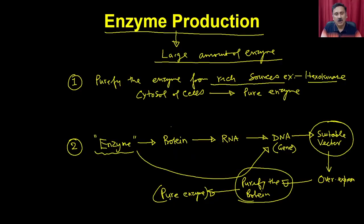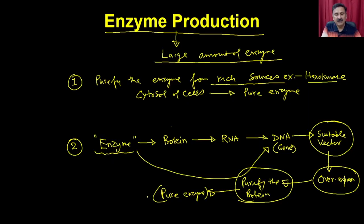Once I have the pure enzyme, I can use it for many applications — for studying DNA recombination, running transcription, translation, replication, and so on. Large quantities can be prepared because once you have cloned the gene into a suitable vector, you can transform it into a suitable host and make proteins in large quantities. This enzyme can be used for structural elucidations, catalyzing reactions, and industrial applications.